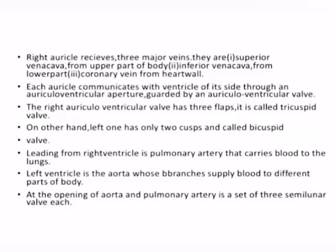Each auricle communicates with the ventricle of its side through an auriculoventricular aperture guarded by an auriculoventricular valve. The right auriculoventricular valve has three flaps and is called the tricuspid valve. On the other hand, the left one has only two cusps and is called the bicuspid valve.